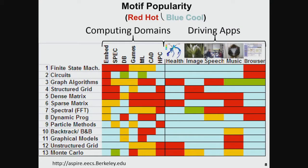These motifs depend on the application, but people have profiled many of these applications and found there are only 13 of them. These 13 motifs are things commonly needed to run applications — including dense and sparse matrix multiplications, Fourier transforms, graph solvers, and so on. Not all are needed in every application. The red dots represent where a particular application runs a lot of a given motif, while blue ones are cold — they don't rely on them much.